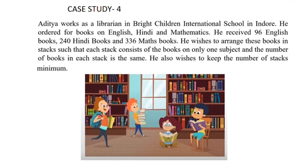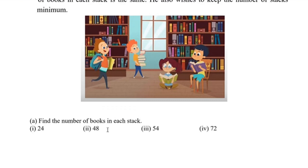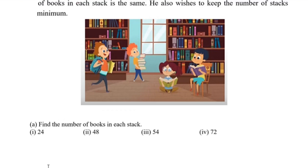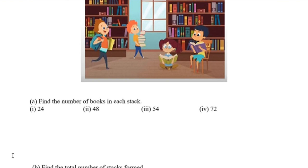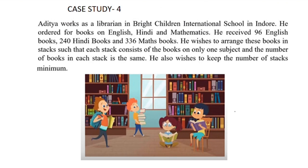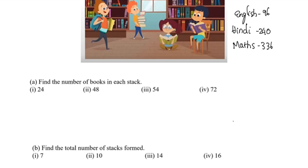To find the same number of books in each stack, we need to find the HCF of 96, 240, and 336. We need to find the same number of books in one stack, so we take: English 96, Hindi 240, Maths 336. We will find the HCF of these three numbers.